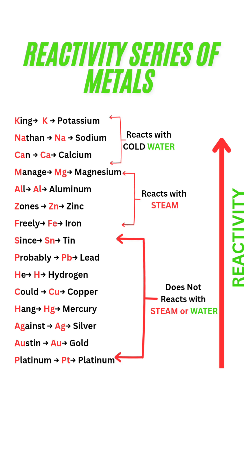King represents potassium with symbol K. Nathan represents sodium with symbol Na. Can represents calcium with symbol Ca. It continues like that down to platinum.